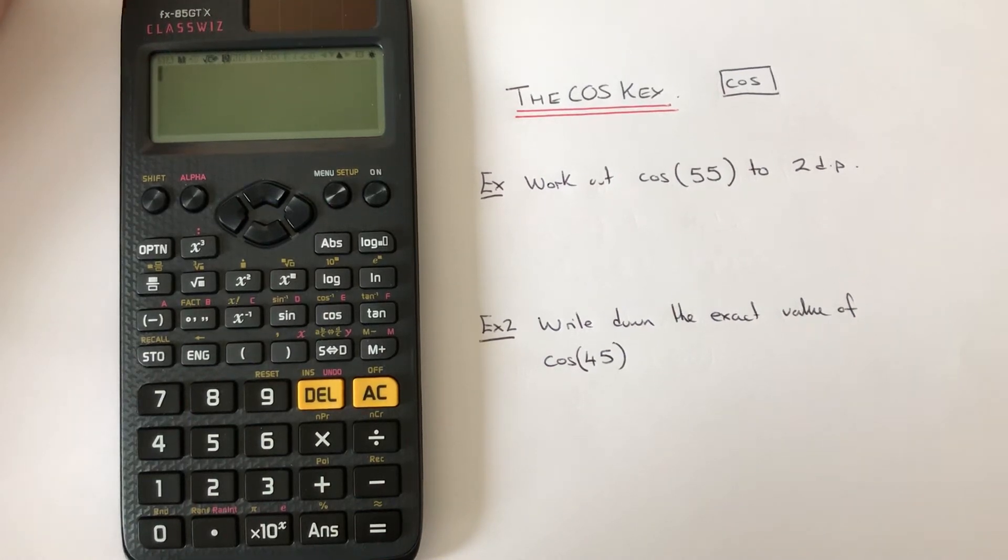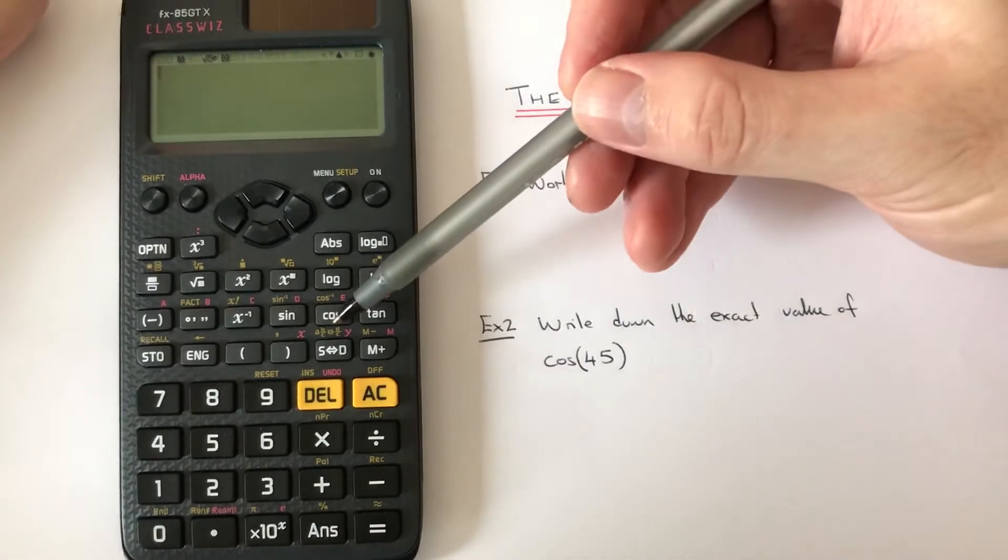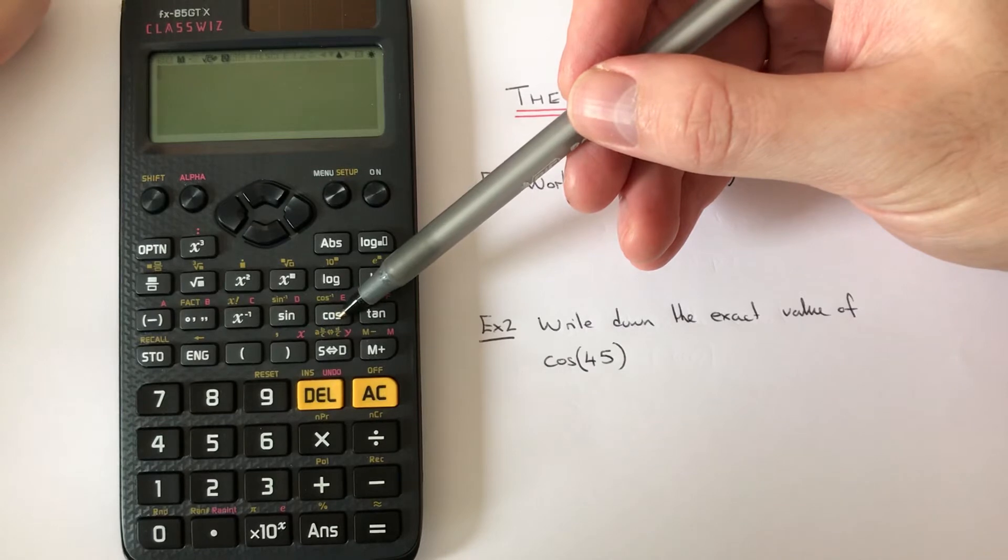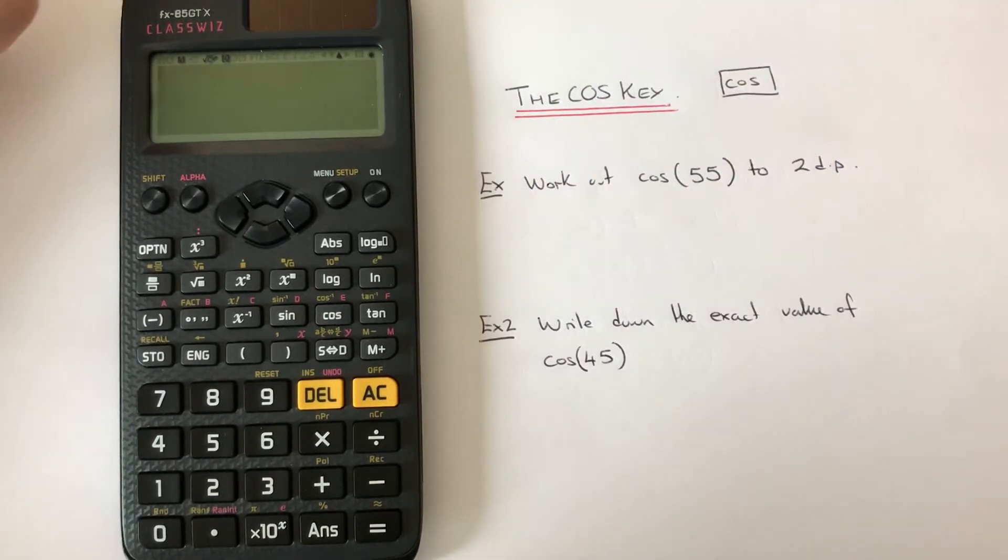Hi guys, welcome back. This is Maths 3000. Today I'm going to show you what the cos key does on a Casio scientific calculator. The cos key can be found on the third row down of the scientific functions. We can use this to convert an angle into a decimal or a fraction, so let's have a look.